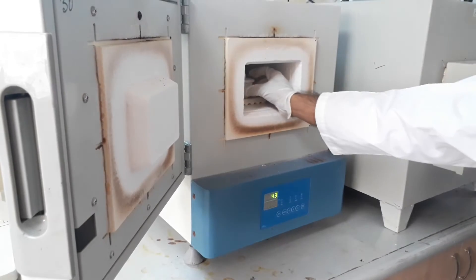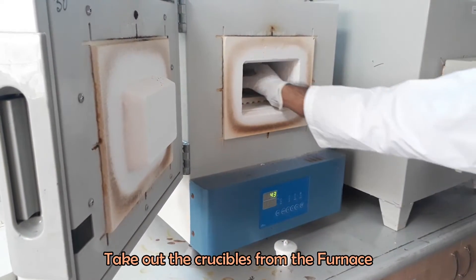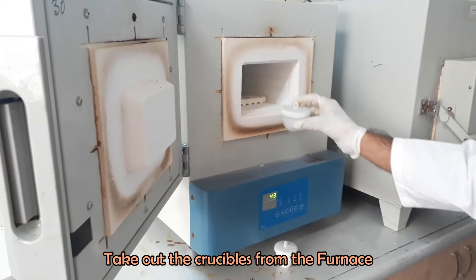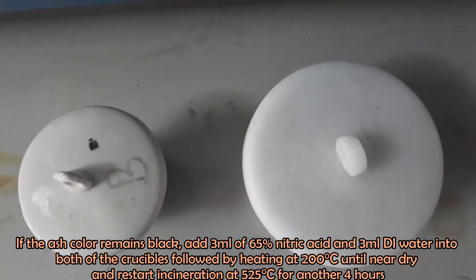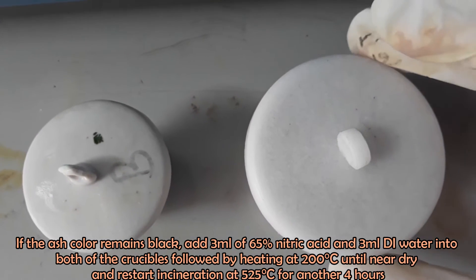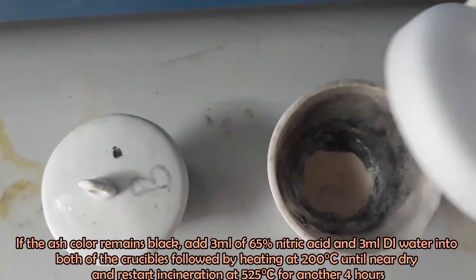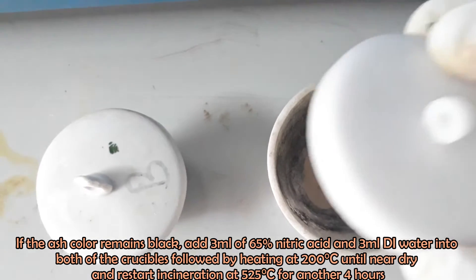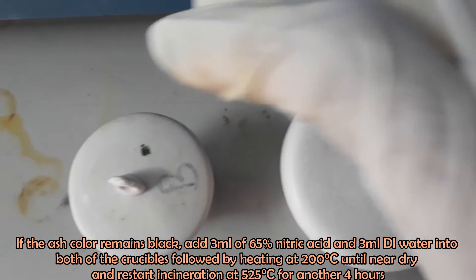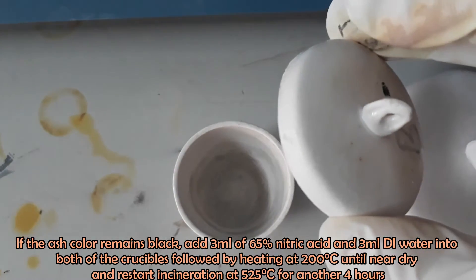After incineration, take out the crucibles from the furnace. If the ash color remains black, add 3 ml of 65% nitric acid and 3 ml deionized water into both of the crucibles followed by heating at 200 degrees Celsius until near dry. And restart incineration at 525 degrees Celsius for another 4 hours.